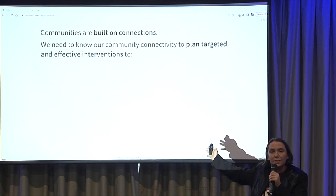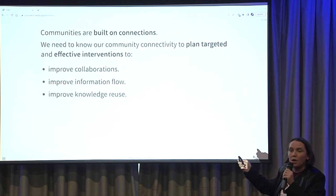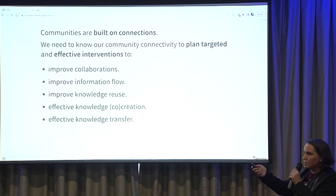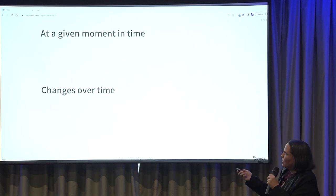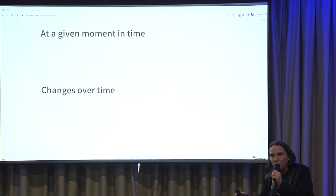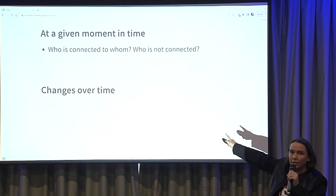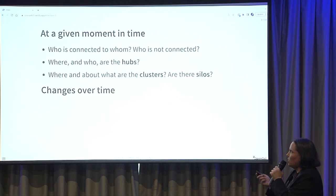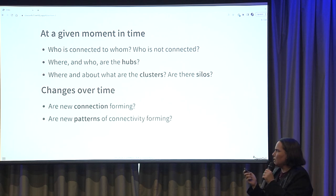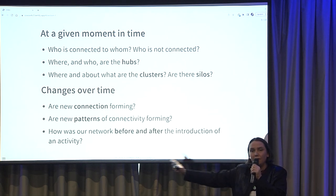We want to have effective interventions to improve collaboration, information flow, knowledge reuse, knowledge co-creation, knowledge transfers — who is building what, who is using what, and who should be working with whom. We try to answer questions at a given moment in time and over time: how do things change? Who is connected to whom? Who is not connected? Where are the hubs — the people who bring together other people? Where are the clusters — the people who work together a lot? What new connections are forming? How was our network before and after an intervention, before and after our champions program?